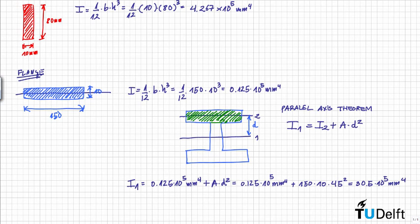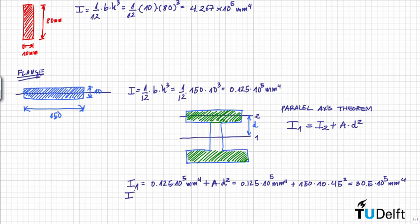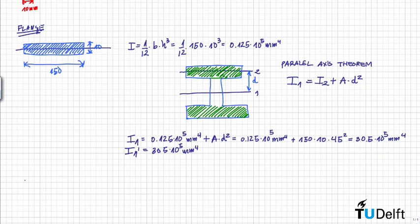This result is the moment of inertia of the upper flange. Now we need the moment of inertia of the lower flange, but due to symmetry it is exactly the same. Then the total moment of inertia is equal to the moment of inertia of the web plus two times the moment of inertia of the flange.